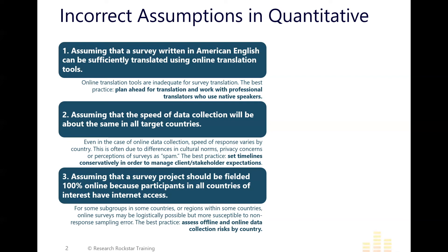You might be planning a multinational study in 10 or 15 countries, and somebody on your team might say these countries all have internet access, so online data collection will be great. But here's the thing: in some countries they have online access, but it's only from their phones. Are you designing a questionnaire where you're comfortable with most people in certain countries only responding from their phones? It's something to think about.